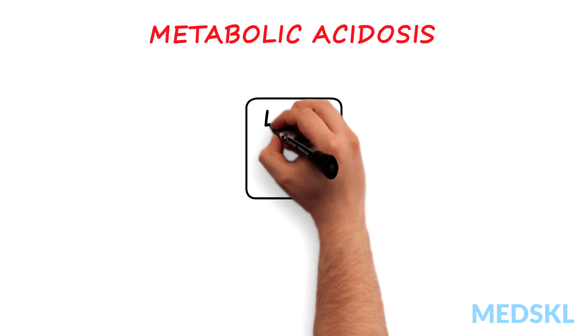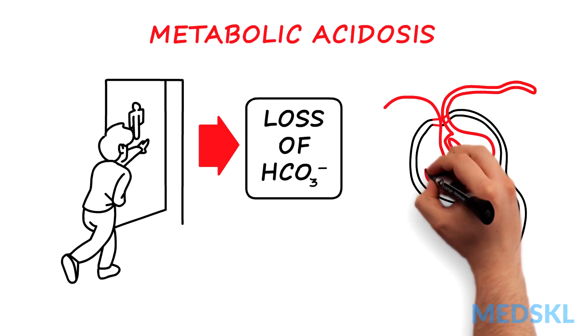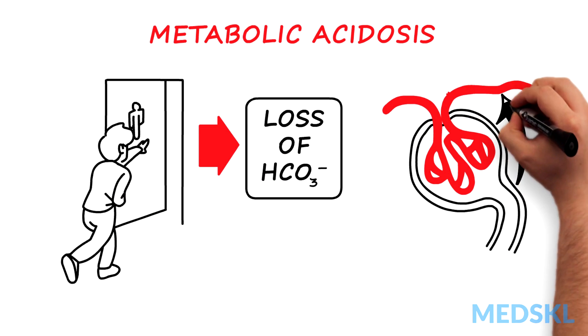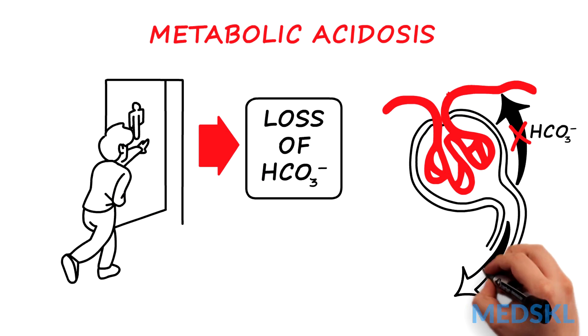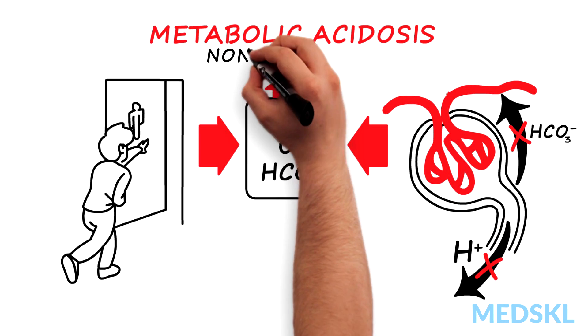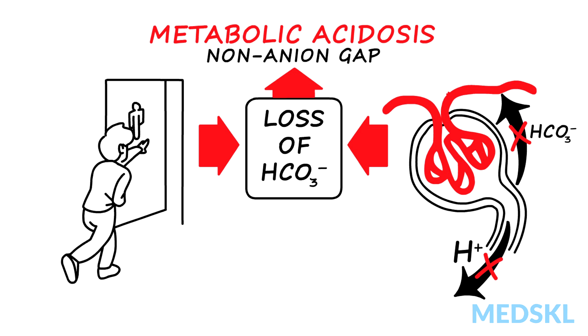Loss of bicarbonate in diarrhea, or loss of bicarbonate by the kidney seen with renal tubular acidosis, causes a non-anion gap hyperchloremic metabolic acidosis.